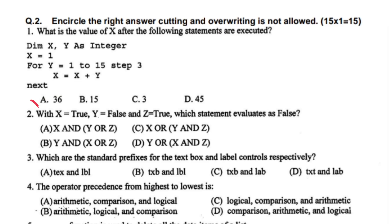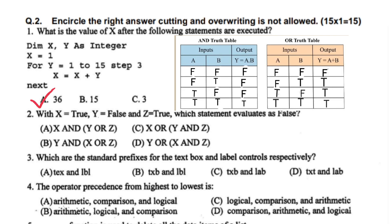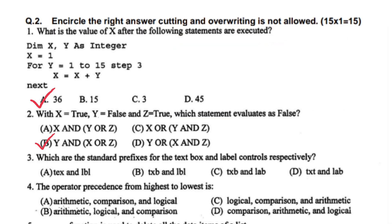With X equal to true, Y equal to false, and Z equal to true, which statement evaluates as false? In AND operation, if one value is true and one is false, the answer is false. Similarly, in OR, if one value is true, the answer is true. X OR Z: X is true and Z is true, so the answer is true. Y is false, false AND true, so the answer is false. The right option is B.